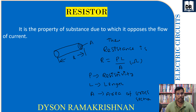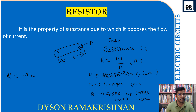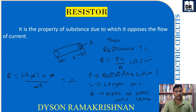The unit for resistivity is ohm-meter, for length is meter, and for area is meter squared. Hence the unit for resistance R is: ohm-meter × meter divided by meter squared — the meters cancel, and we get ohm. So the unit for resistance is ohm.